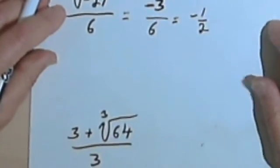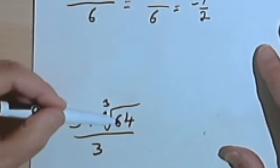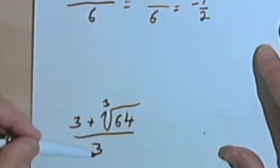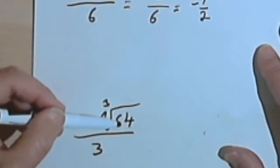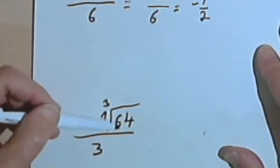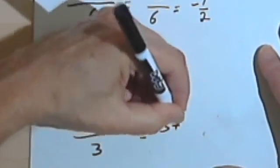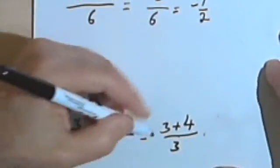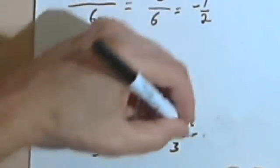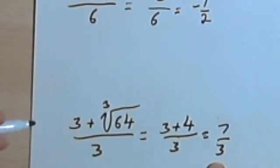Here's another one. I've got 3 plus the cube root of 64, everything divided by 3. I want to start with the cube root. Well, the cube root of 64 is 4. 4 times 4 times 4 is 64. So I'll rewrite this as 3 plus 4 divided by 3. And of course I have to add these together. So 3 plus 4 is 7 over 3. I can't simplify this anymore, so I'll just leave it like that.